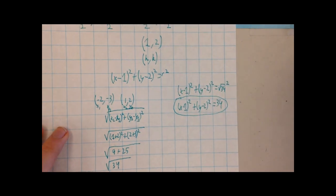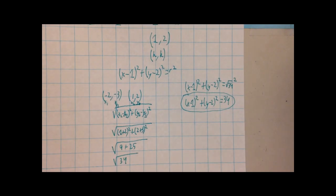And that is the equation of the circle with the endpoints negative 2, negative 3, and 4, 7. Thank you.